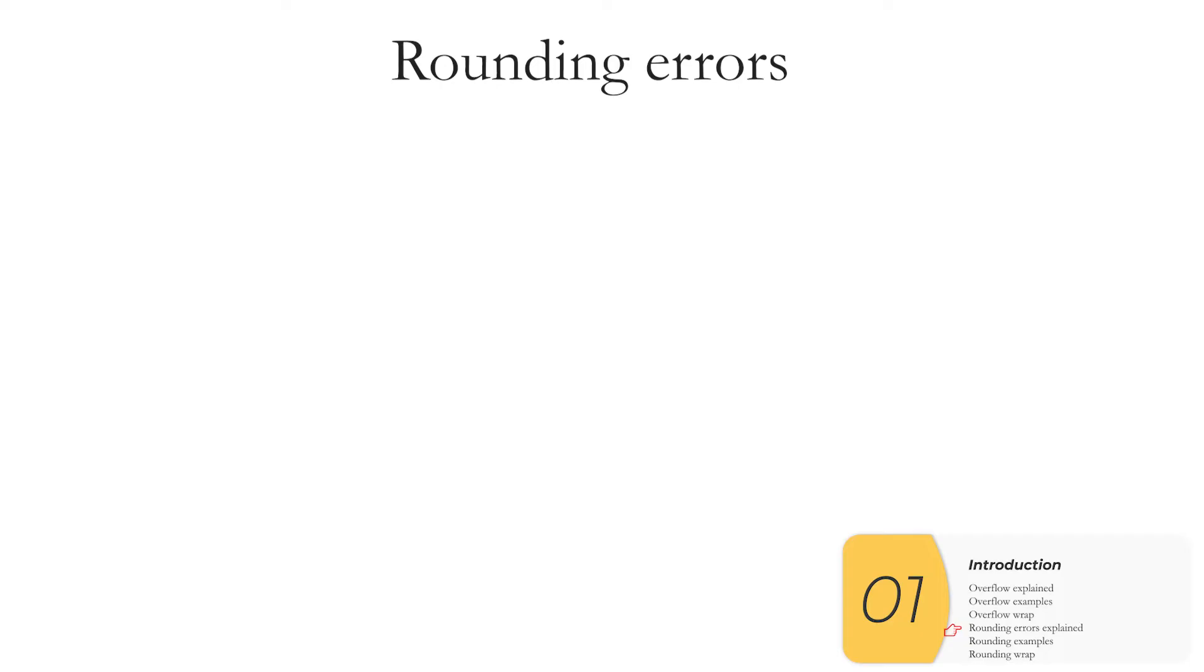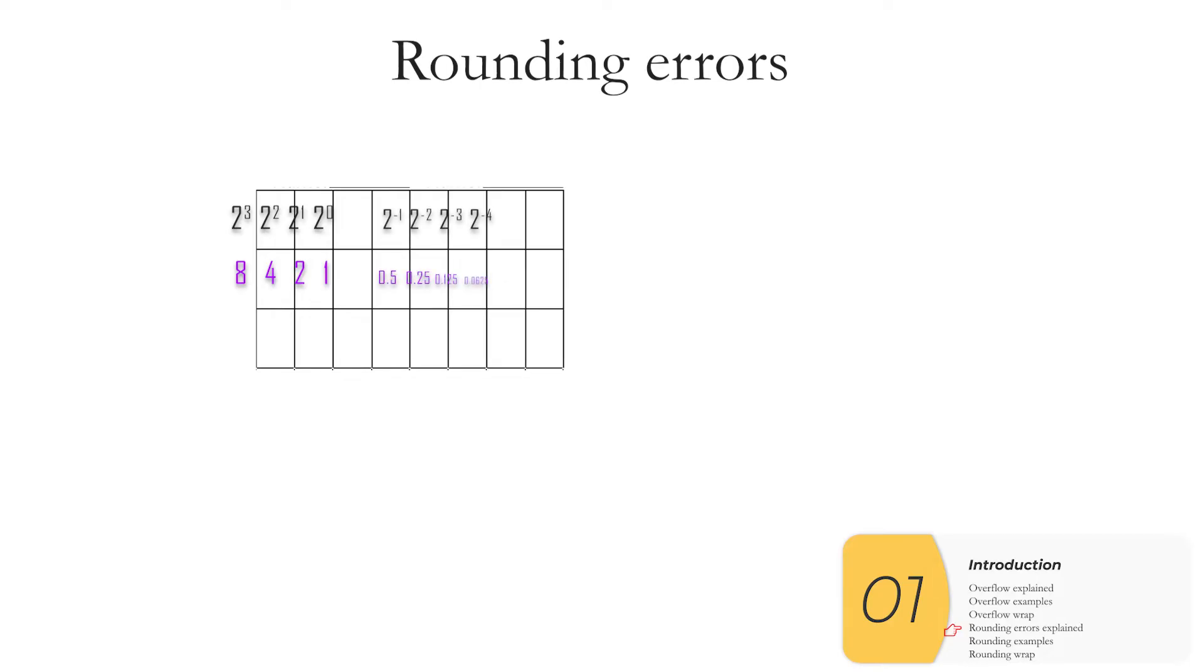Another type of error you'll see is rounding errors. And just to review, if we want to represent whole numbers with bits, we'll have our bits represent 2 to the 0, 2 to the 1, 2 to the 2, 2 to the 3, and so on and so forth. Now, if we want to represent decimals, we'll do the same thing, except now we're going to have our bits represent 2 to the minus 1, 2 to the minus 2, 2 to the minus 3, and so on and so forth.